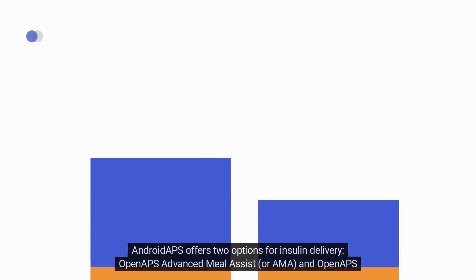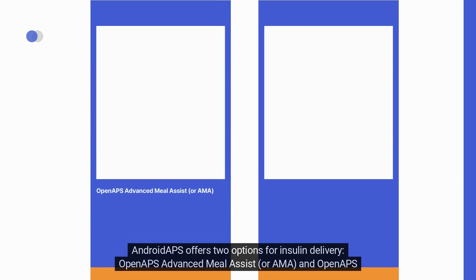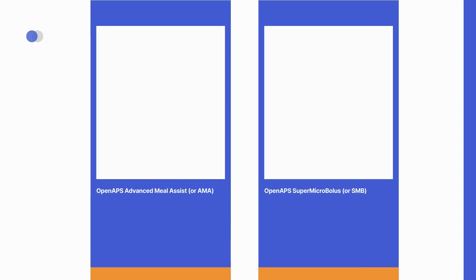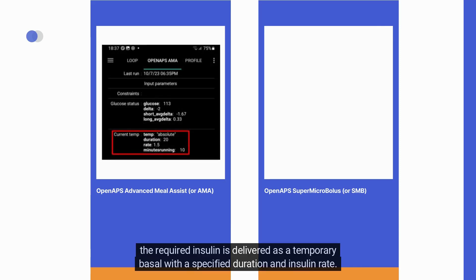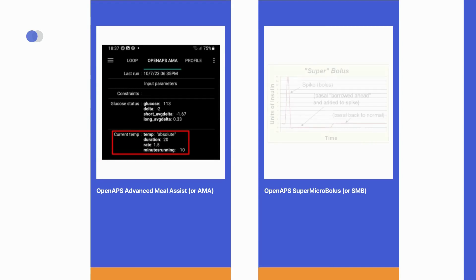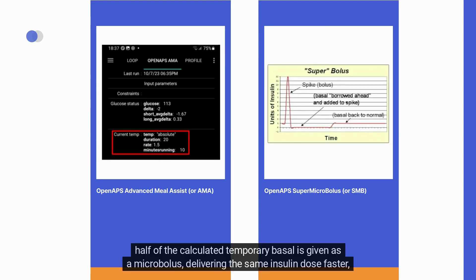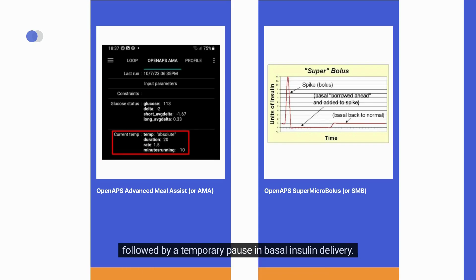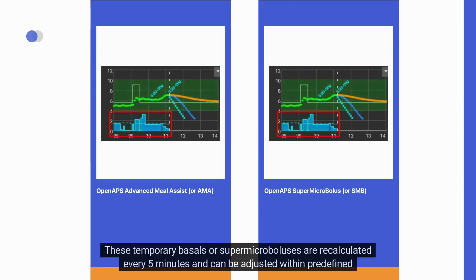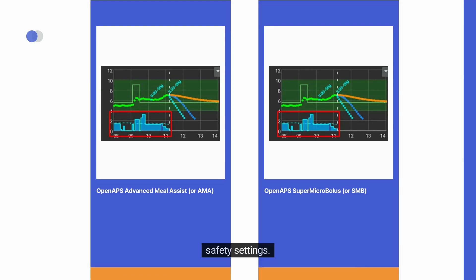Android APS offers two options for insulin delivery: Open APS Advanced Meal Assist (AMA) and Open APS Super Microbolus (SMB). In AMA, the required insulin is delivered as a temporary basal with a specified duration and insulin rate. In SMB, half of the calculated temporary basal is given as a microbolus, delivering the same insulin dose faster, followed by a temporary pause in basal insulin delivery. These temporary basals or supermicroboluses are recalculated every five minutes and can be adjusted within predefined safety settings.